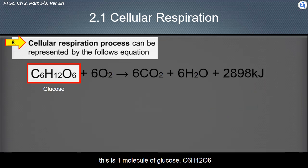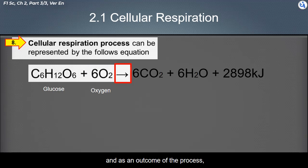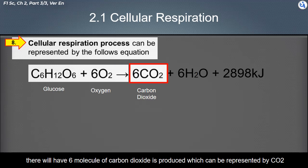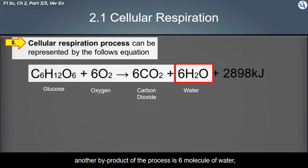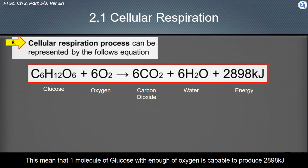One molecule of glucose (C6H12O6) requires six molecules of oxygen (O2) to complete a full cellular respiration process. As an outcome, six molecules of carbon dioxide (CO2) are produced, along with six molecules of water (H2O), and 2898 kilojoules of energy is released. This means one molecule of glucose with enough oxygen is capable of producing 2898 kilojoules of energy.